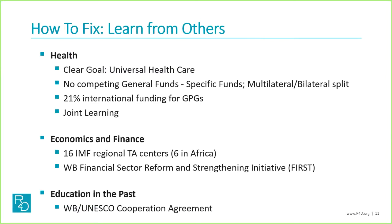We can learn some things from other sectors. The health sector has clearer goals, much less competition with general funds but a lot of specific funds, and a fairly good joint learning system. In economics and finance, the IMF and World Bank have done a pretty good job of getting macroeconomic regional training centers and strengthening mechanisms into place around the world. It's no accident that very few low-income countries these days are particularly poorly managed macroeconomically — they used to be, and that's definitely due in large part to this. Even in our own sector in the past, there was a cooperative agreement between the World Bank and UNESCO where things were pretty well spelled out and worked reasonably well. The point being that it's not impossible.